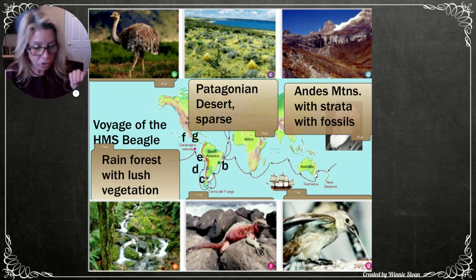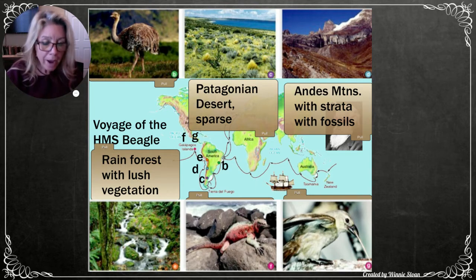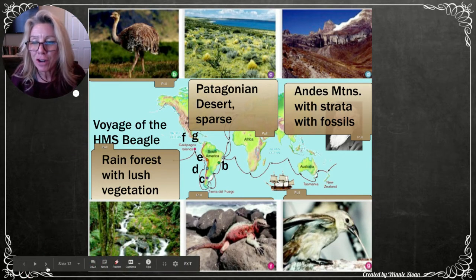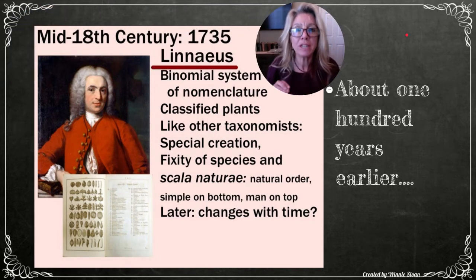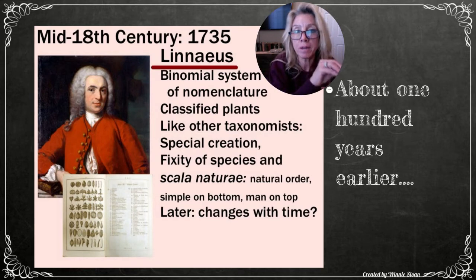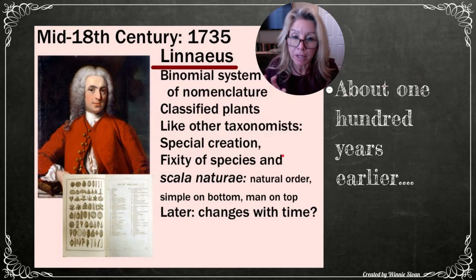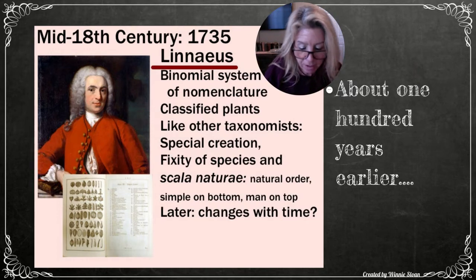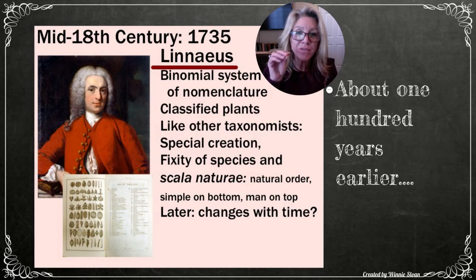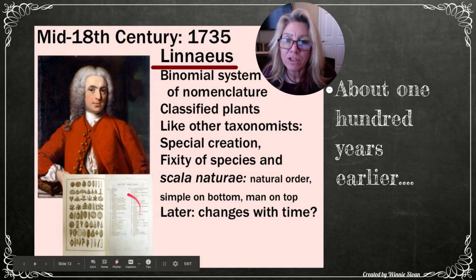Darwin's viewpoint began changing throughout the voyage, influenced by several scientists. One was Linnaeus (1707–1778), who developed binomial nomenclature and classified all known plants. Like other taxonomists of his time, he believed in the fixity of species — that each was individually created by God and unchanging.